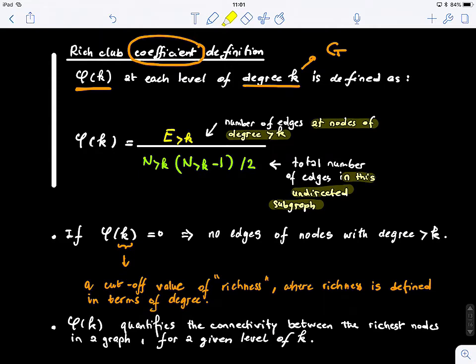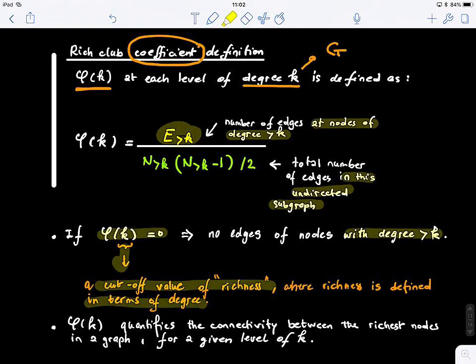But let's say if at level k, you have phi of k, the richness coefficient, is equal to zero. What does it mean? There are basically no edges, right. It means no edges of nodes with degree greater than zero, because what you're counting here is the number of edges that have nodes with degree greater than k. So basically, this is what we call a cutoff value. So the k here is actually a cutoff value of richness, where richness is defined in terms of degree.